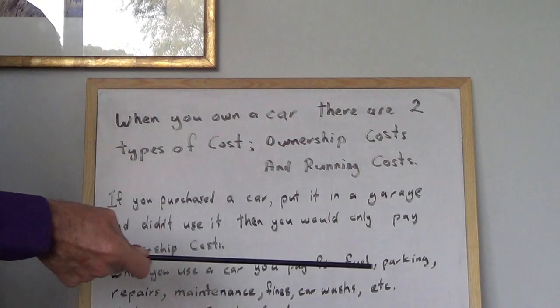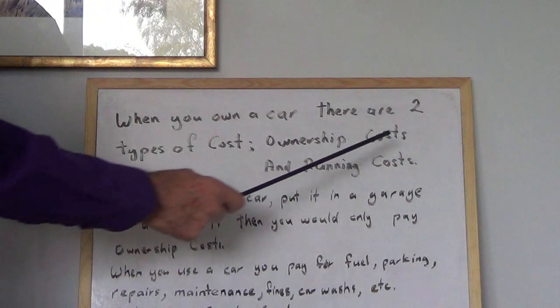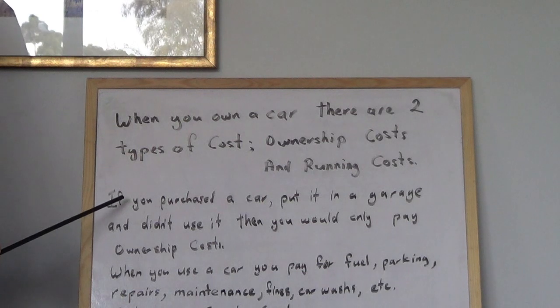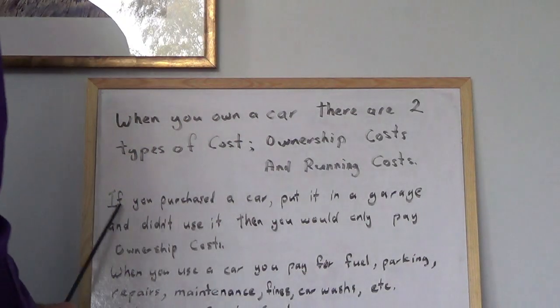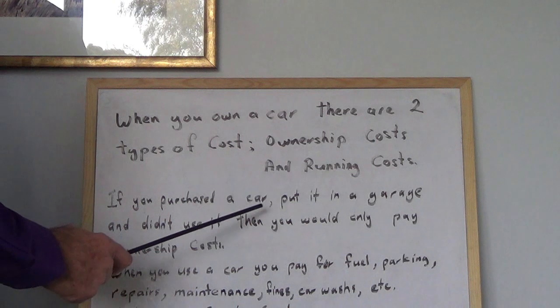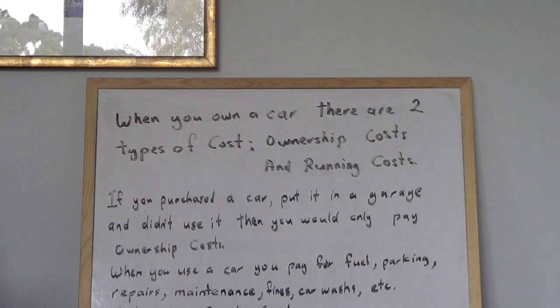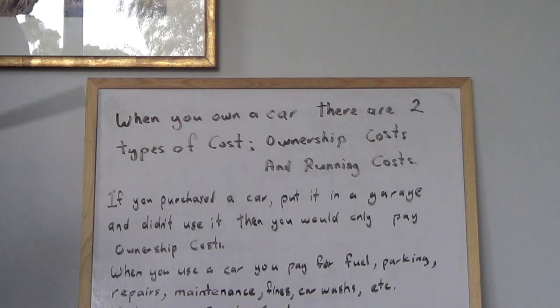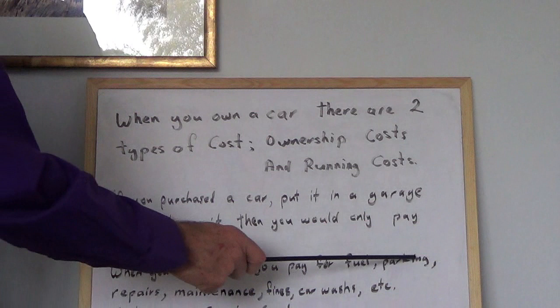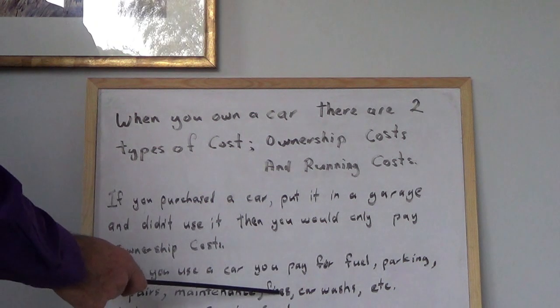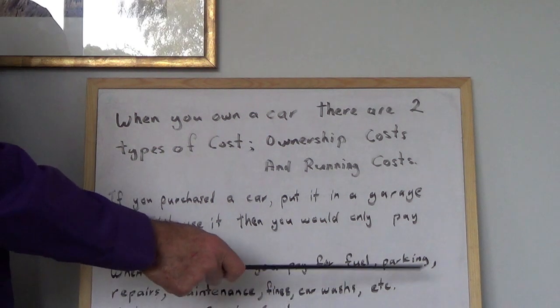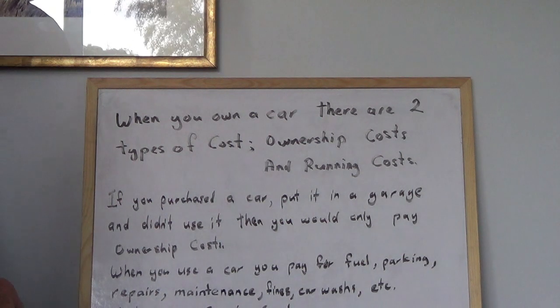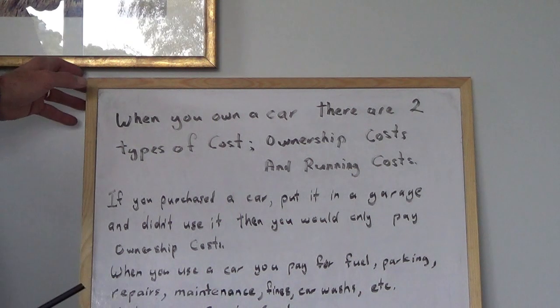When you own a car there are two types of costs: ownership costs and running costs. The way to look at ownership costs - suppose you buy a car, put it in a garage and don't use it, then the only thing you're going to pay is ownership costs. Now when you take out the car and start using it, you have to pay for fuel, parking, repairs, maintenance, fines, car wash, grooming, whatever. Those are all your running costs.